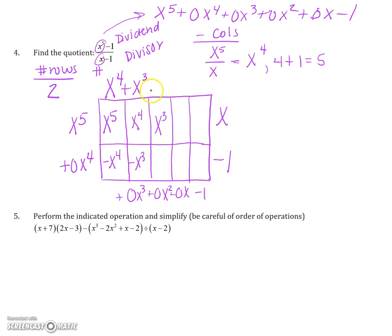x times what gives me x cubed? Has to be x squared. So x times x squared gives me x cubed. Continue out your column. So negative x squared. Now I need 0x squared. I have negative x squared, so that means this top box must also be positive, so it's going to be x squared.